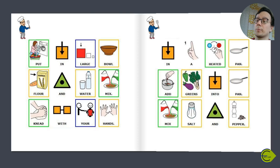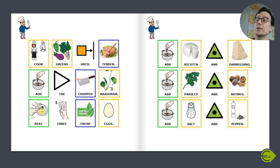Cook greens until tender, add the chopped marjoram. Beat three fresh eggs, add ricotta and parmigiano, add parsley and nutmeg.